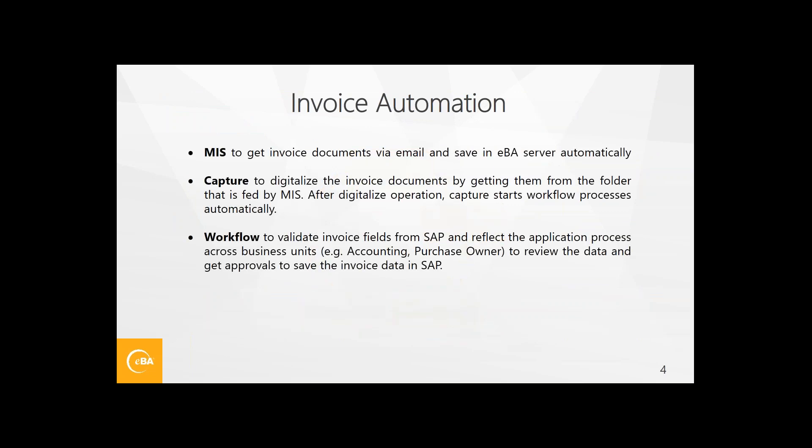MIS means Mail Integration Server, and with this feature we can get invoice documents via email and save them in the EBA server automatically. We also have the capture module in this process — it is used to digitalize invoice documents by getting them from the folder that is fed by MIS. After the digitalization operation, we can start workflow processes automatically.